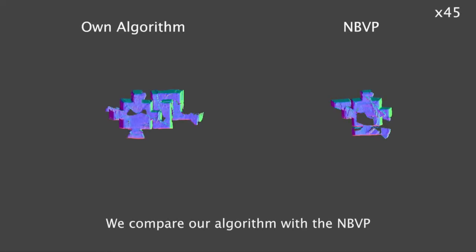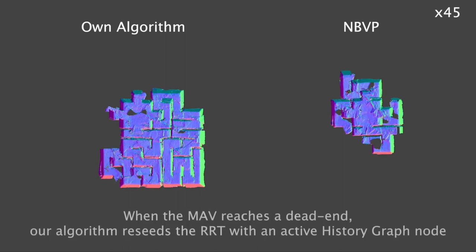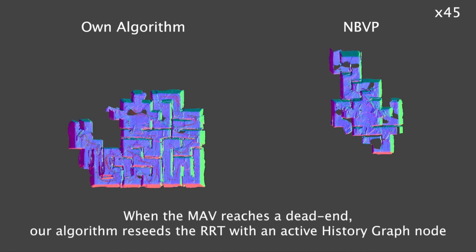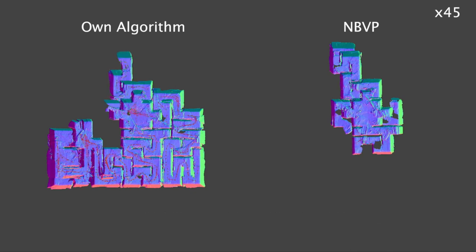This is a side-by-side comparison of our algorithm versus the classical next best view. Notice how our algorithm, every time it reaches a dead end, it reseeds the RRT very fast, thanks to the history graph.